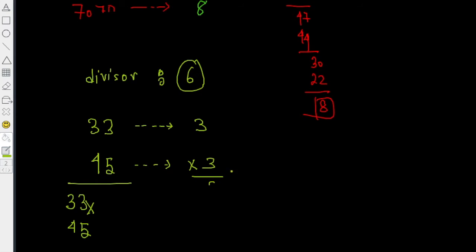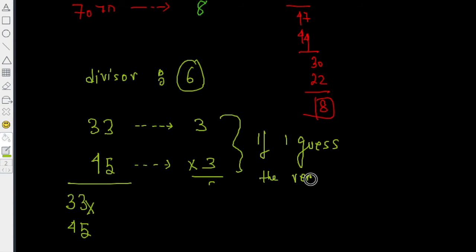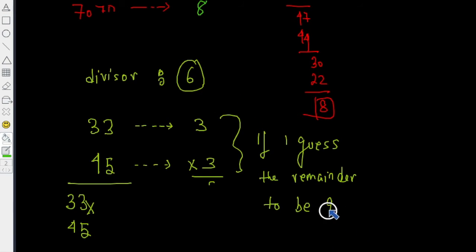Our guess would be 3 times 3 equals 9. But you immediately see the problem with this guess: if I guess the remainder is 9, there is a problem. If you divide something by 6, the remainder cannot be greater than 6. But our guess of 3 times 3 equals 9 is obviously greater than 6, so definitely 9 is not the remainder.